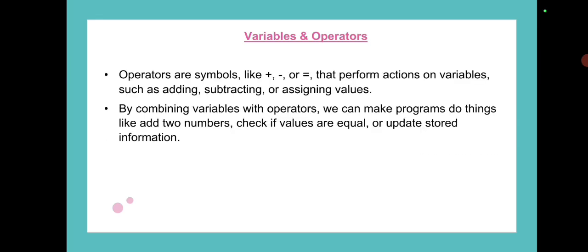Operators are basically symbols like plus, minus, multiply, and equals to that perform actions on variables such as adding, subtracting, or assigning values. When we combine variables and operators, we can make programs to do things like square a number, check if numbers are equal or not, check if a number is largest or not.